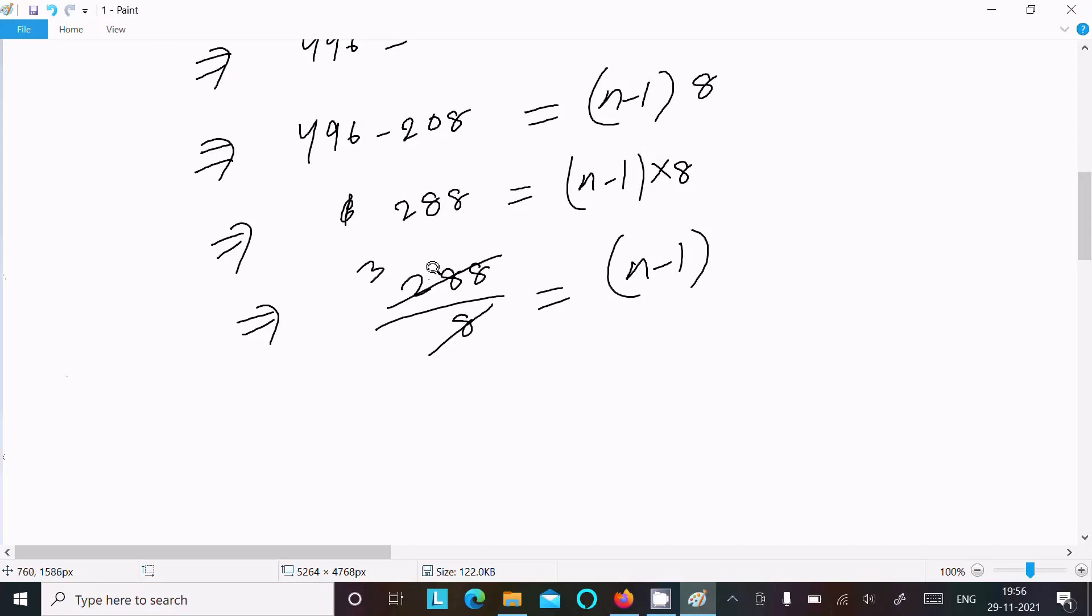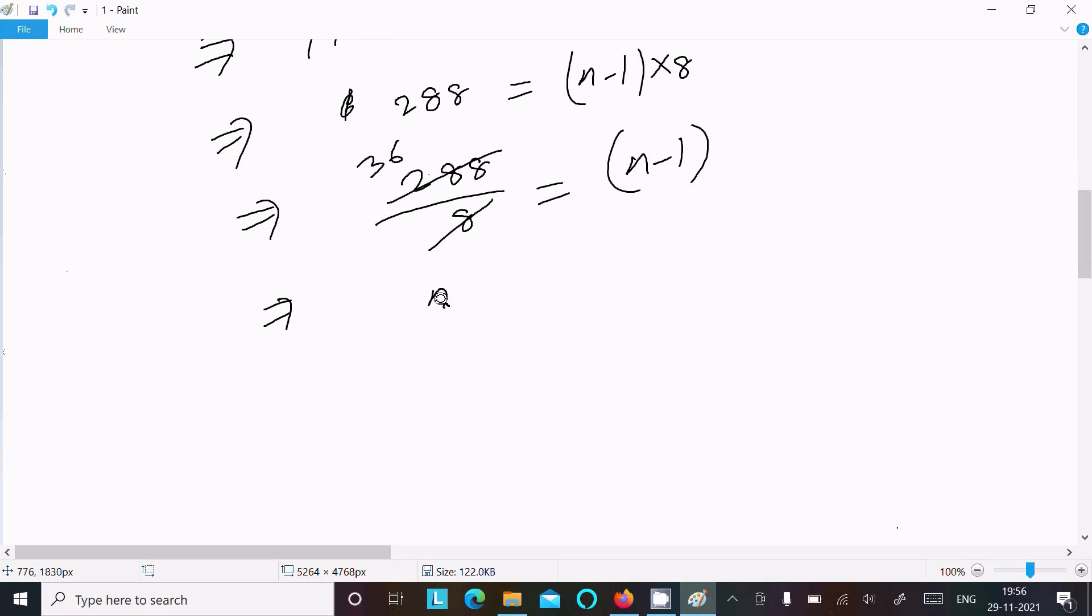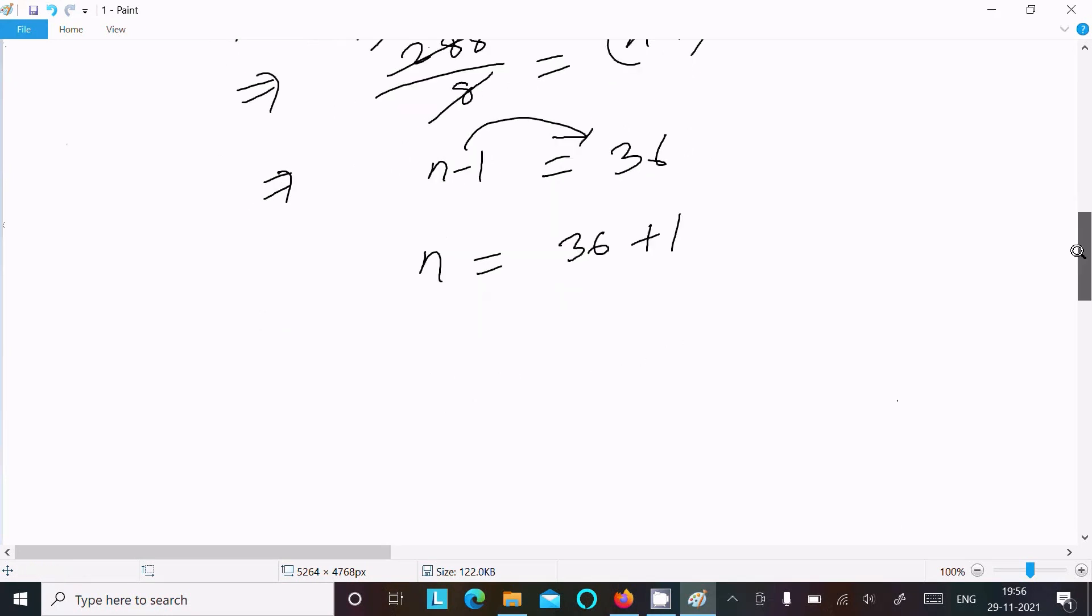So 48 that comes, so this cancels 6 times. Now the next is n - 1, that is equal to 36. And this one moving on the right, so 36 + 1, this here 37 that comes. So this is the answer of this question.